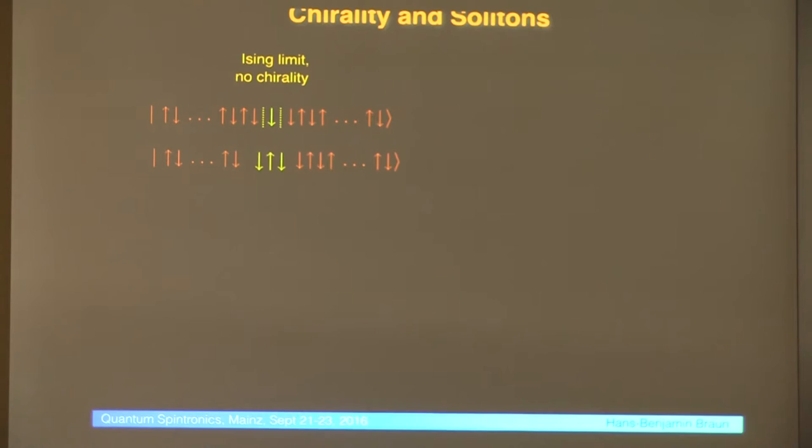Just actually to remind you of a few things of spin chains. Magnons are no longer the good quantities, you should not talk about magnons, and the reason is the following, because if you flip a cluster of spins, you always have two domain walls, and that's actually the basic entity.